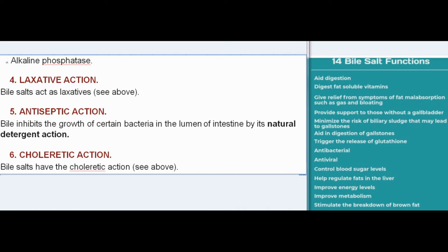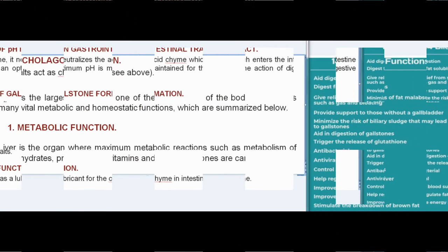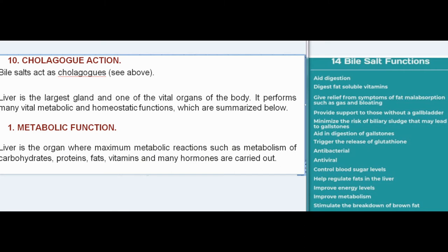Additional functions of bile include: choleretic action of bile salts; maintenance of pH in the gastrointestinal tract — as bile is highly alkaline, it neutralizes the acid chyme entering the intestine from the stomach, thus maintaining an optimum pH for digestive enzymes; prevention of gallstone formation; lubrication function — mucin in bile acts as a lubricant for chyme in the intestine; and cholagogue action of bile salts.